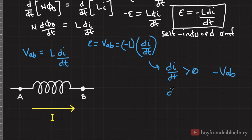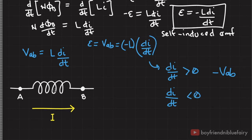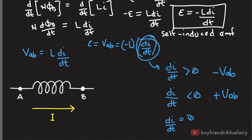Otherwise, if the current is decreasing across the inductor, then di/dt is negative, and negative times negative gives a positive potential difference — so we have a potential rise. If the change in current across the inductor is zero, then di/dt equals zero, and the potential difference across the inductor is zero as well.